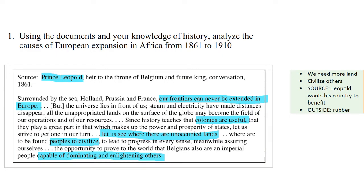OneNote has been tremendously helpful for the document based question, or DBQ, in AP World. Students can annotate documents like this one here. They can write notes about document sourcing and how the document relates to the prompt as evidence. We used to do this with pen and paper. OneNote is helpful to put all this online, but to me, that's not transformative.